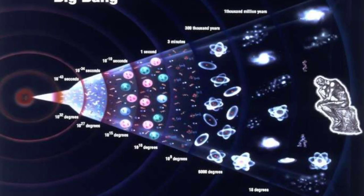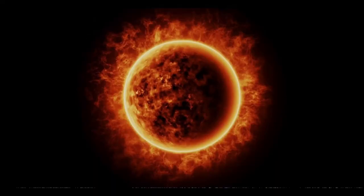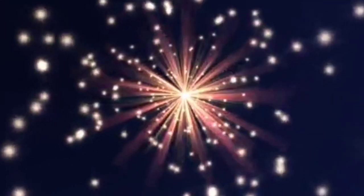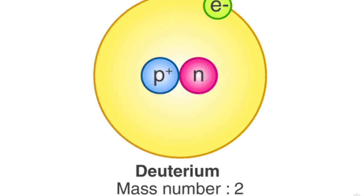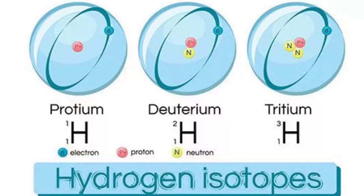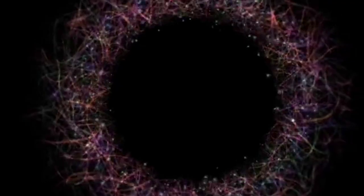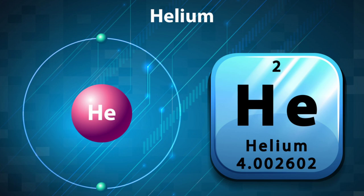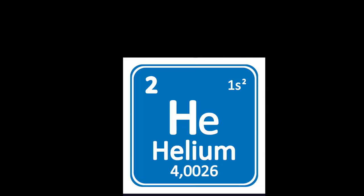About 100 seconds after the big bang, the temperature would have fallen to 1,000 million degrees — the temperature inside the hottest stars. At this temperature, protons and neutrons would no longer have sufficient energy to escape the attraction of the strong nuclear force, and would have started to combine together to produce the nuclei of atoms of deuterium, or heavy hydrogen, which contain one proton and one neutron.